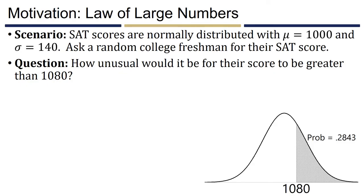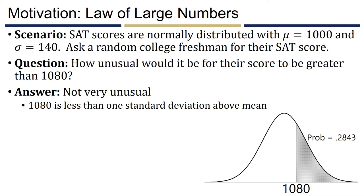Consider this situation: SAT scores follow a normal distribution with a population mean of 1,000 and a population standard deviation of 140. If we ask a random college freshman for their SAT score, how unusual would it be for their score to be greater than 1,080? Since 1,080 is less than one standard deviation above the mean, this is not very unusual. Observations within one standard deviation of the mean are relatively common, and as shown in the graph, the probability of scoring 1,080 or higher is about 28%.